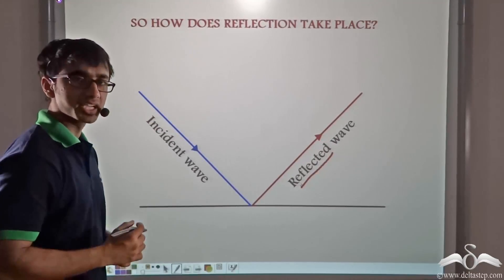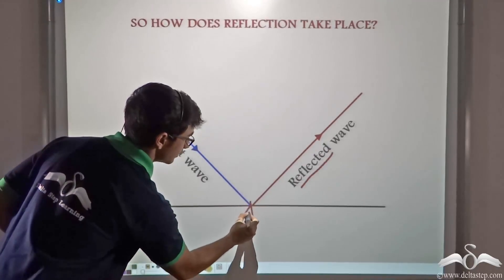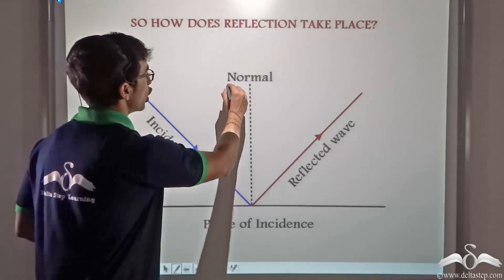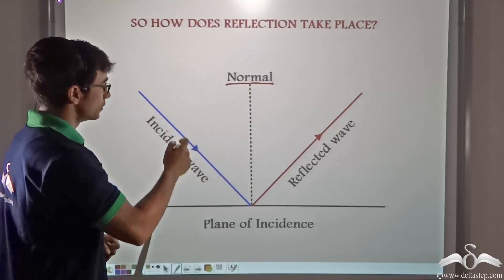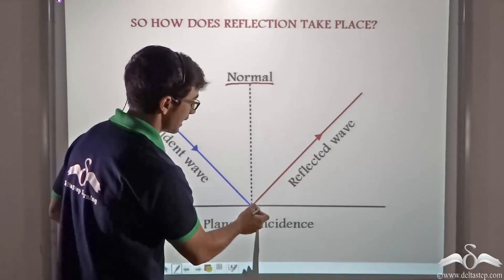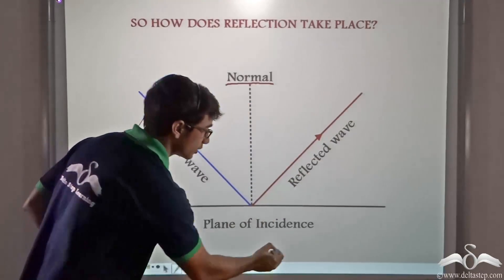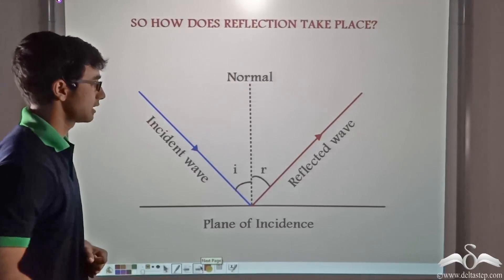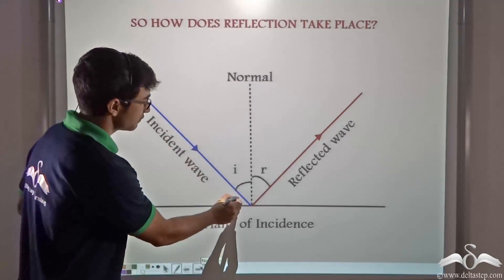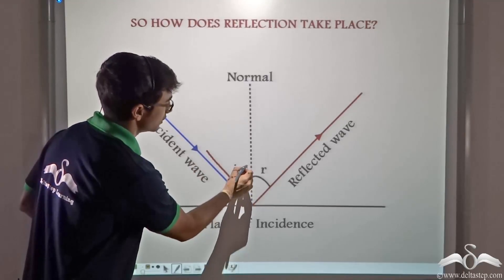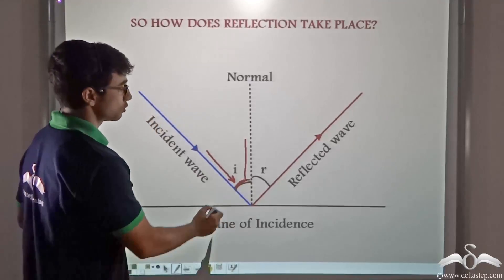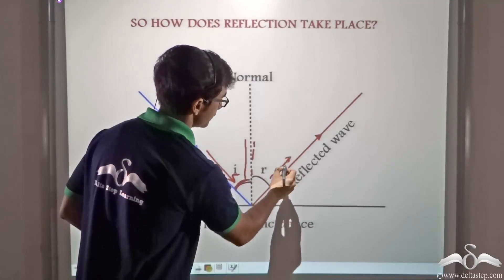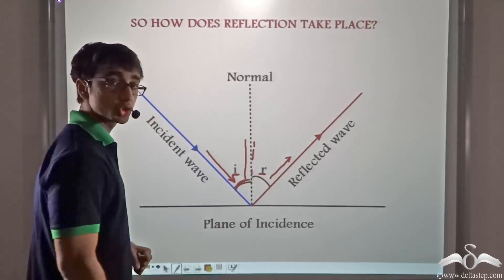If we draw a perpendicular at the point of incidence, that perpendicular is known as the normal. And the plane on which the incident wave, the reflected wave and the normal at the point of incidence lie is known as the plane of incidence. The angle made by the incident wave and the normal is known as the angle of incidence, shown by the letter I. And the angle made by the normal and the reflected wave is known as the angle of reflection, shown by the letter R.